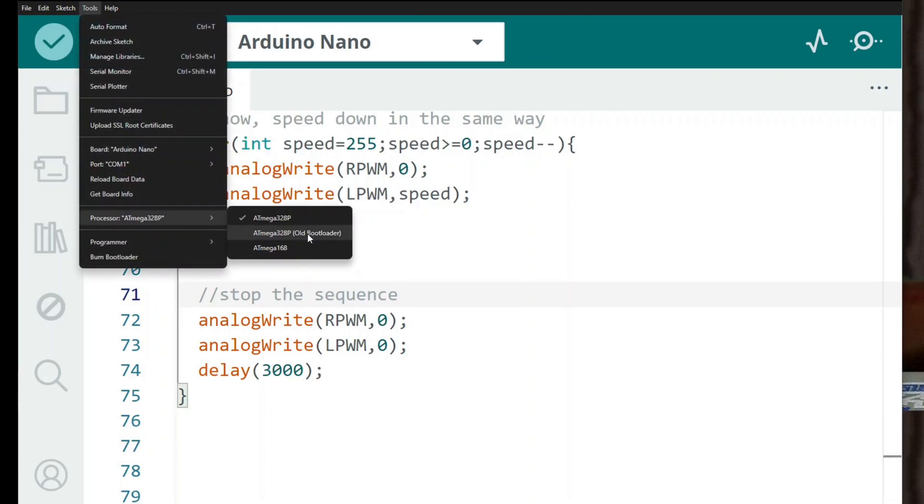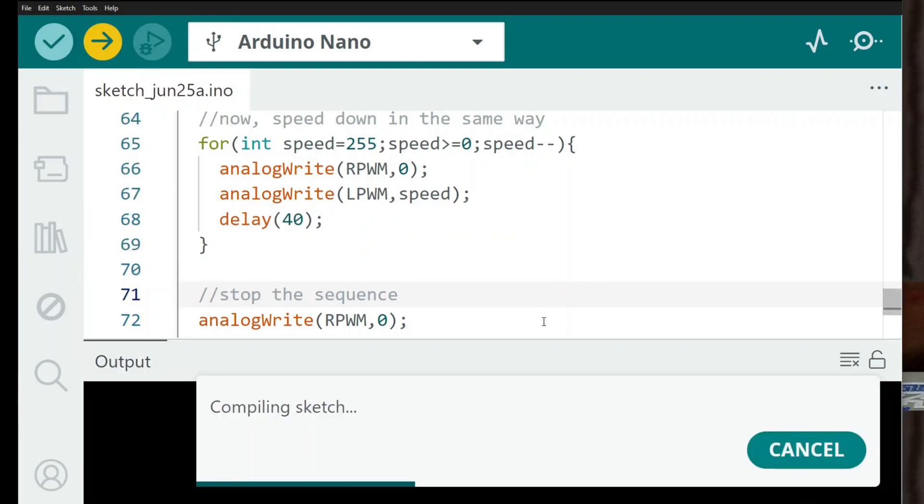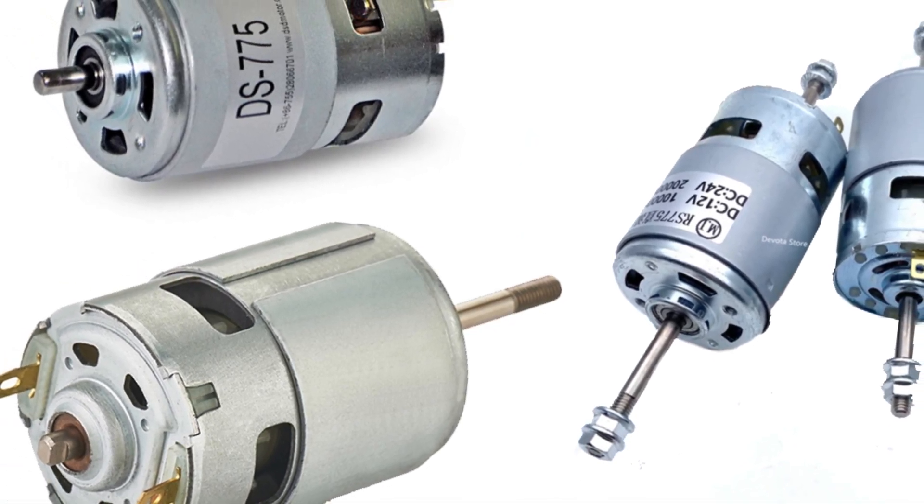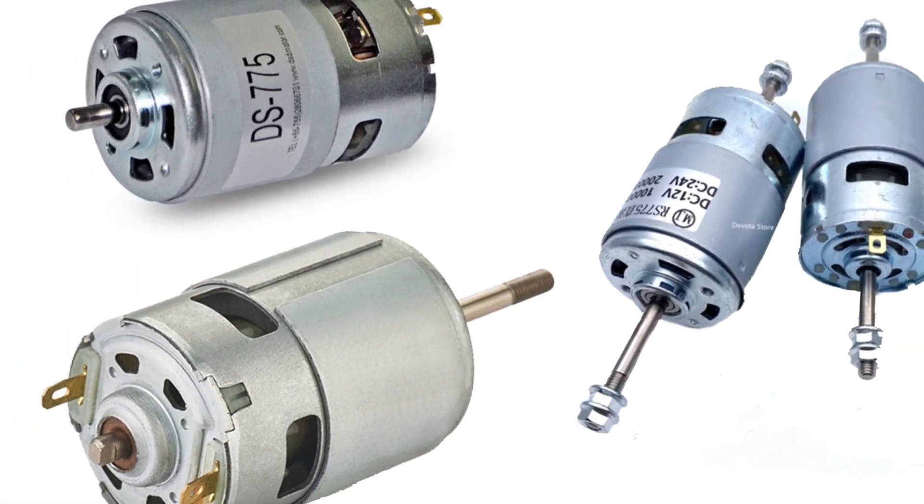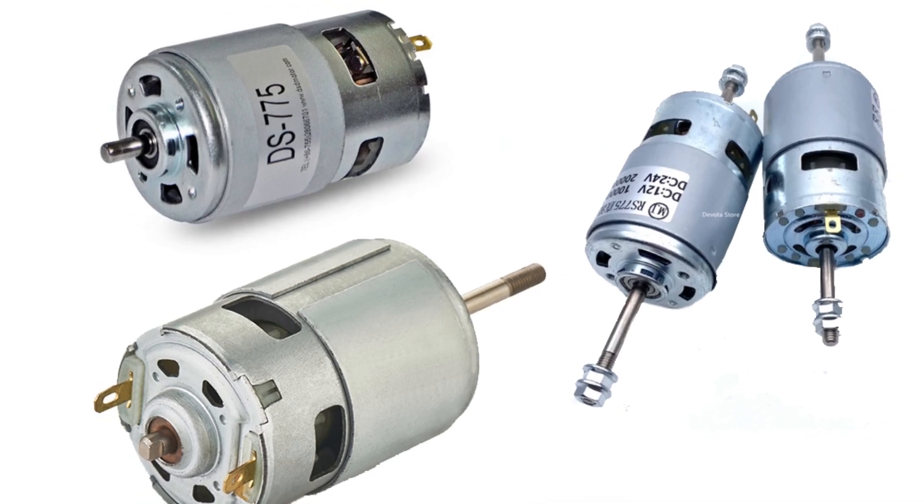775 motors are everywhere. DIY drill presses, mini grinders, RC cars and e-bikes, CNC machines, toy cars. But always pick the right motor for the right job, and test it with real loads.